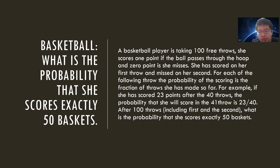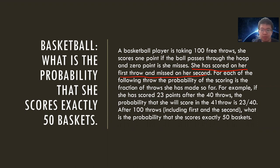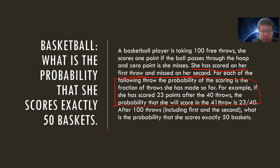Okay, so the basketball player is taking 100 throws, and she scores one point if the ball passes through the hoop and zero points if she misses. She has scored on her first throw and missed the second. For each of the following throws, the probability of scoring is a fraction of the throws she has made so far. For example, if she has scored 23 points after 40 throws, then the probability of the next will be 23 divided by 40. So this is why this problem is difficult. After 100 throws, what is the probability that she scored exactly 50 baskets?